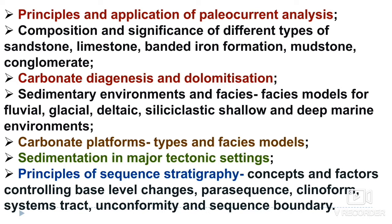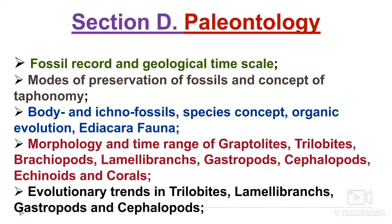Section D is paleontology. Topics include the fossil record and geological time scale, modes of preservation of fossils, concept of taphonomy, body and trace fossils, species concept, organic evolution, and Ediacara fauna. Then morphology and time range of graptolites, trilobites, brachiopods, lamellibranchs, gastropods, cephalopods, echinoids, and corals — you will have to read these one by one and predict the pattern of questions.